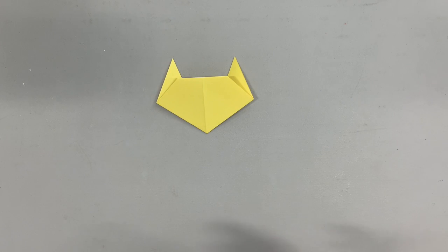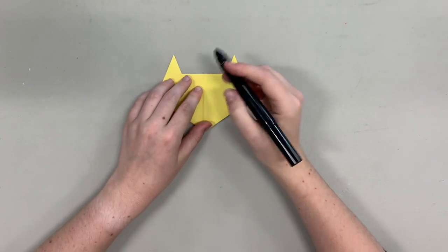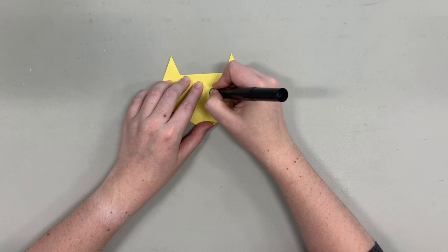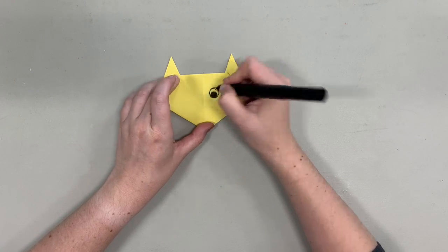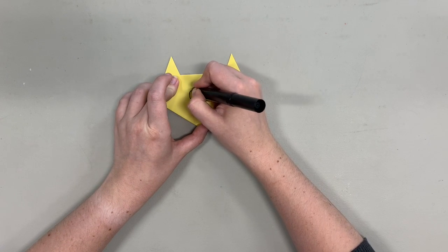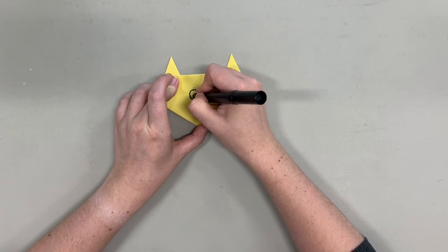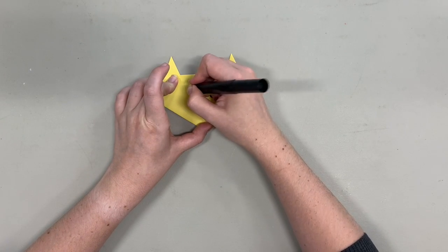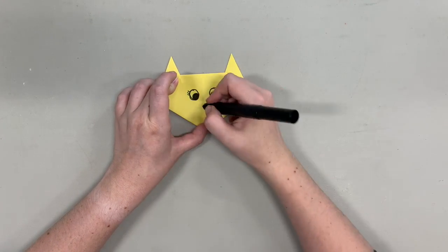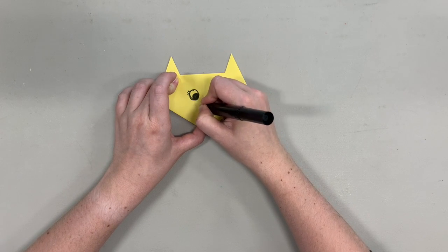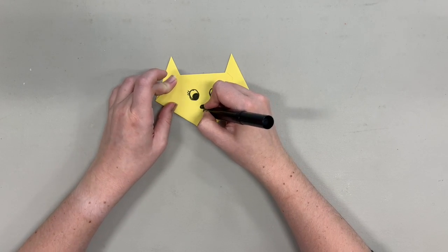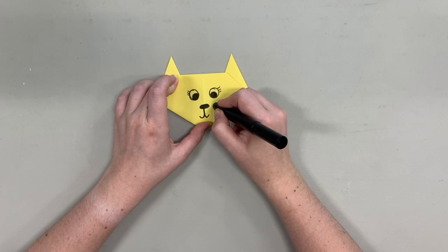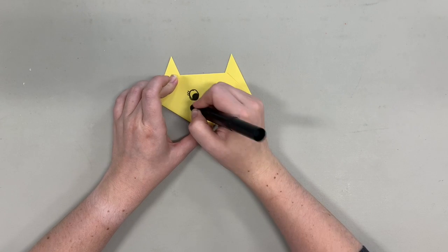We want some nice big eyeballs right here. I'm going to give mine little eyelashes because I want to be creative with my face. Here's her nose, and what else do cats need? They need a mouth, and last they need whiskers.